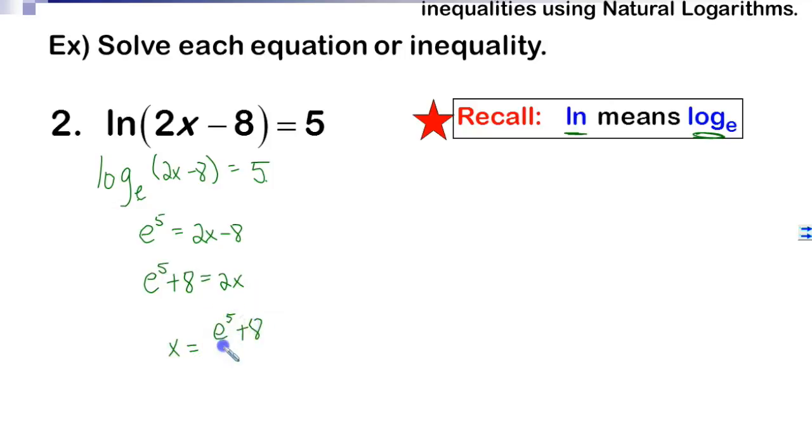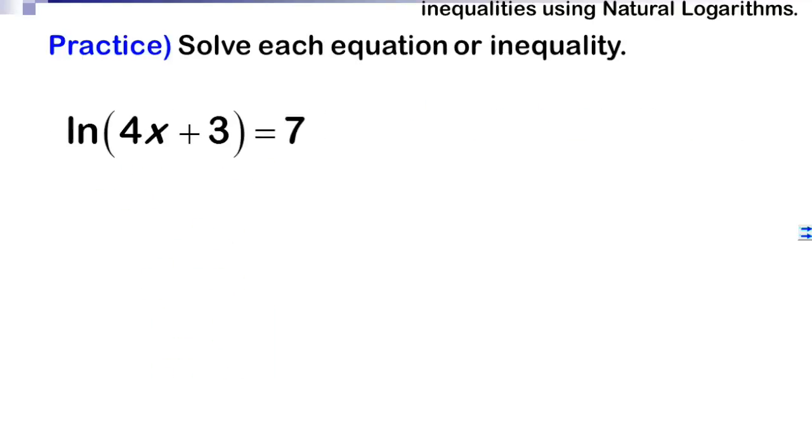We're going to get e to the fifth plus 8 all over 2. Now we really can't simplify that at all. No, you cannot simplify 8 and 2. That doesn't work. You'd have to do both of them, but we can enter it into the calculator if we wanted to.